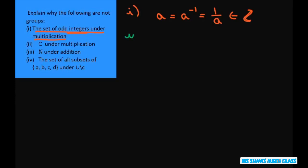For the complex numbers under multiplication, zero belongs to the complex numbers, but zero has no inverse. So that's why that's not a group.